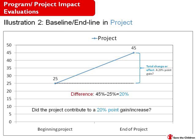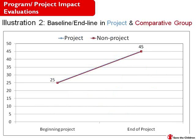But we must still ask: did the project contribute to a 20 percentage point increase in immunization? In impact evaluation, we want to look at the net effect our project had. The graph shows the same 25% baseline and 45% endline for our project beneficiaries, but also shows a comparative group with a baseline of 25% coverage that also reached 45% coverage at the endline. In essence, coverage in non-project areas increased at the same rate as in our project area.